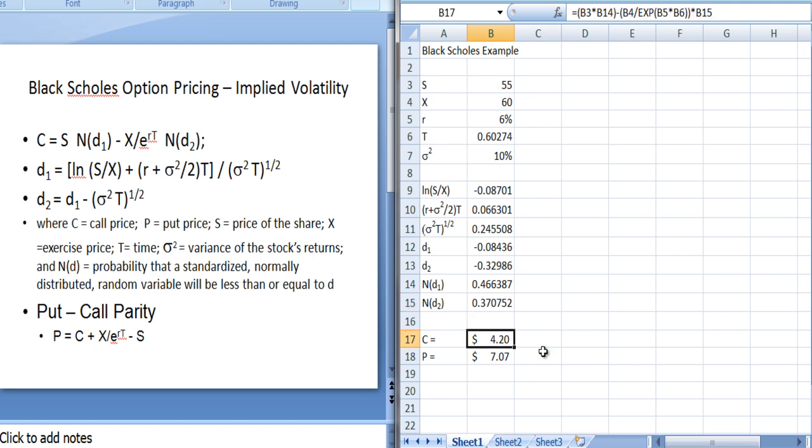And then I've calculated the price of the call option using this formula. B3 times B14, stock price times N(d1), minus the present value of this exercise price times B15 or N(d2). And we get 4.20.